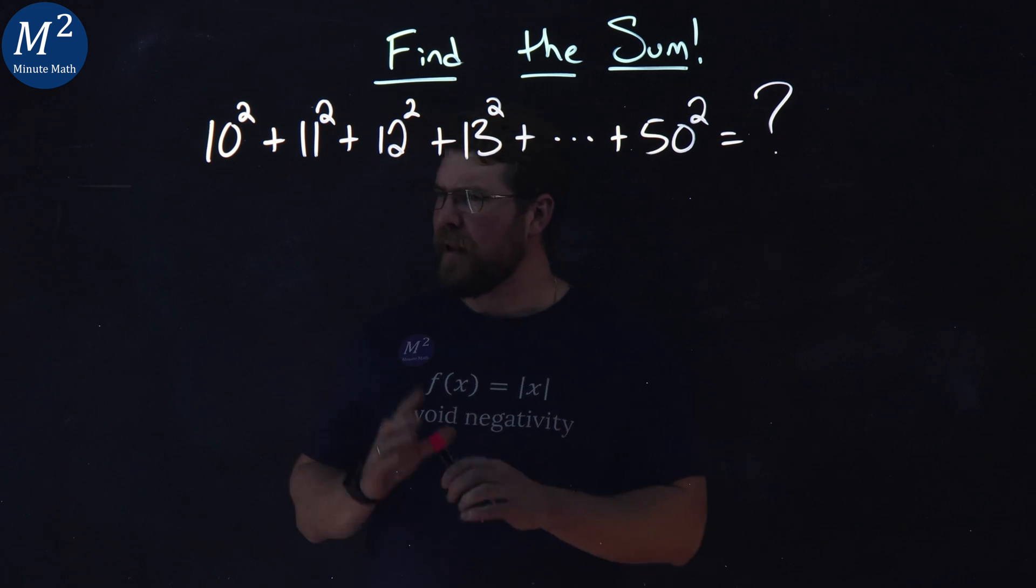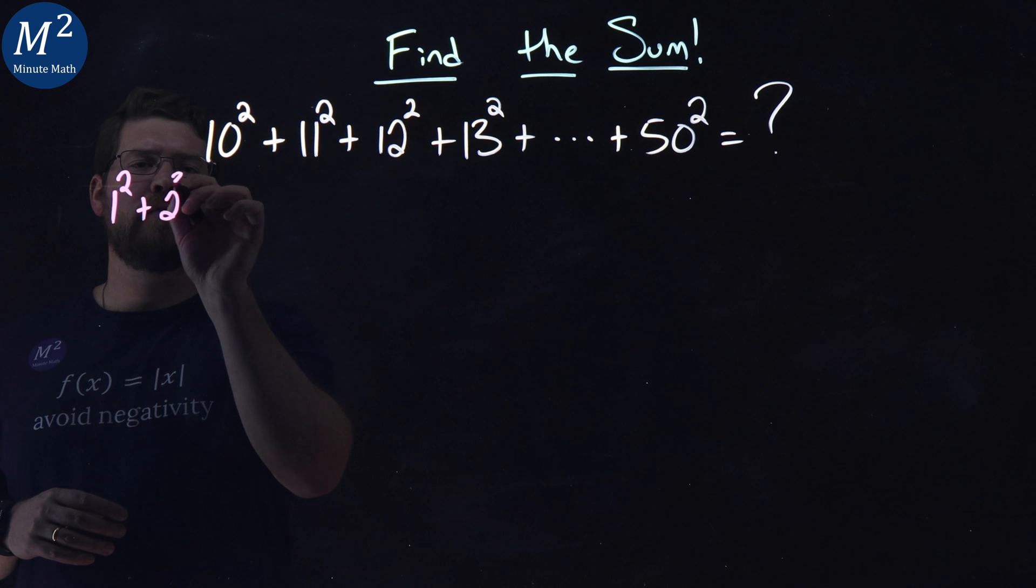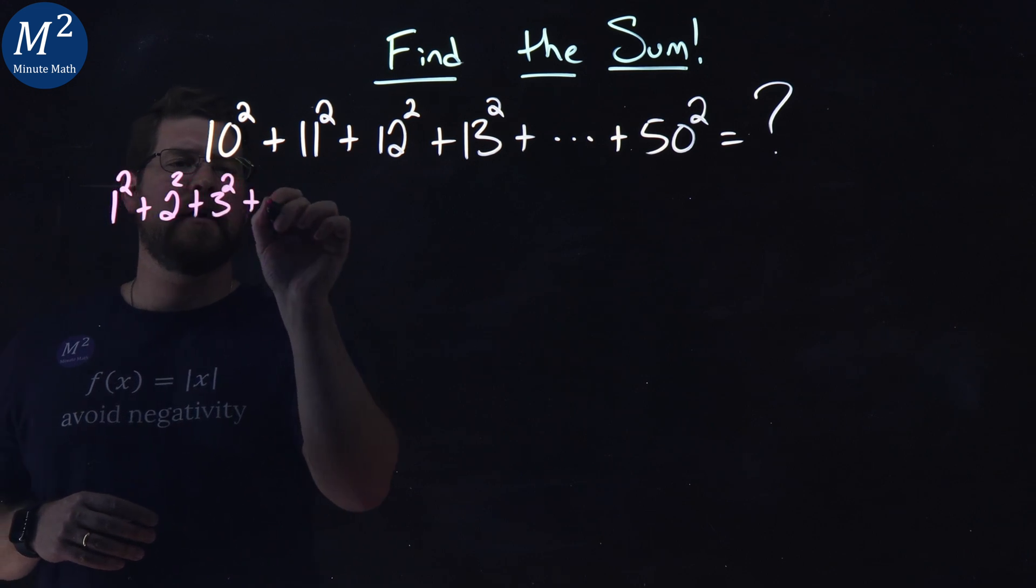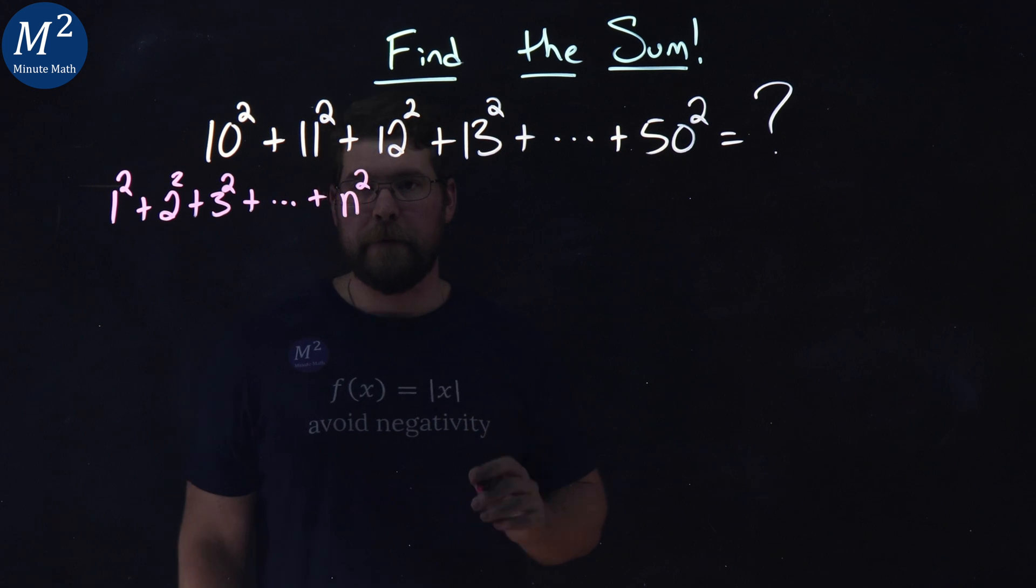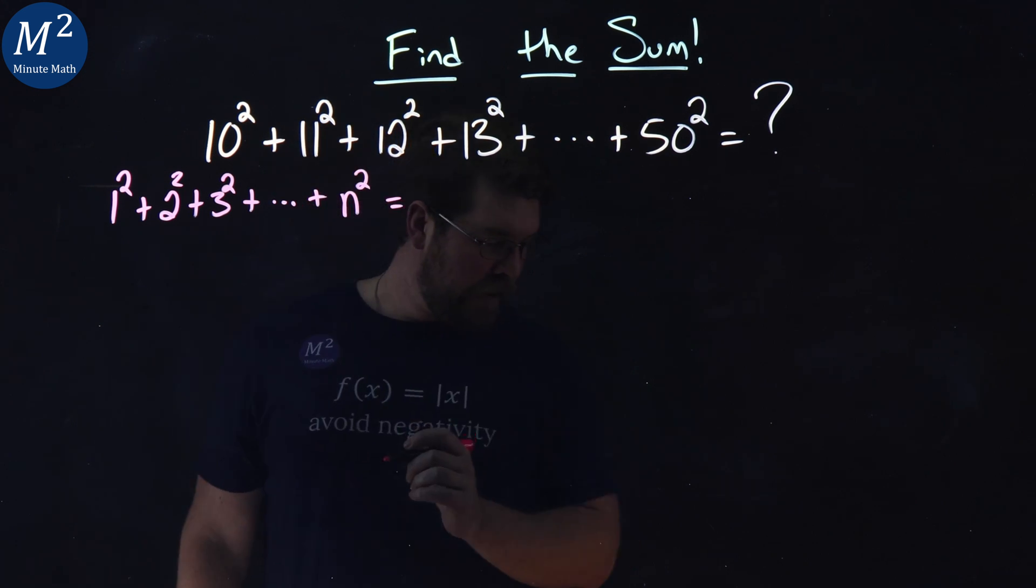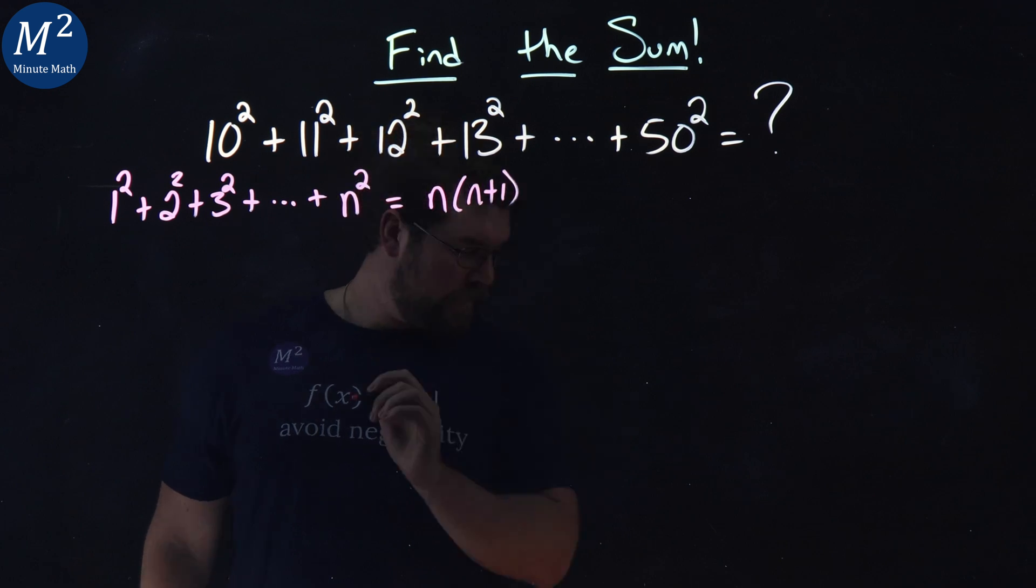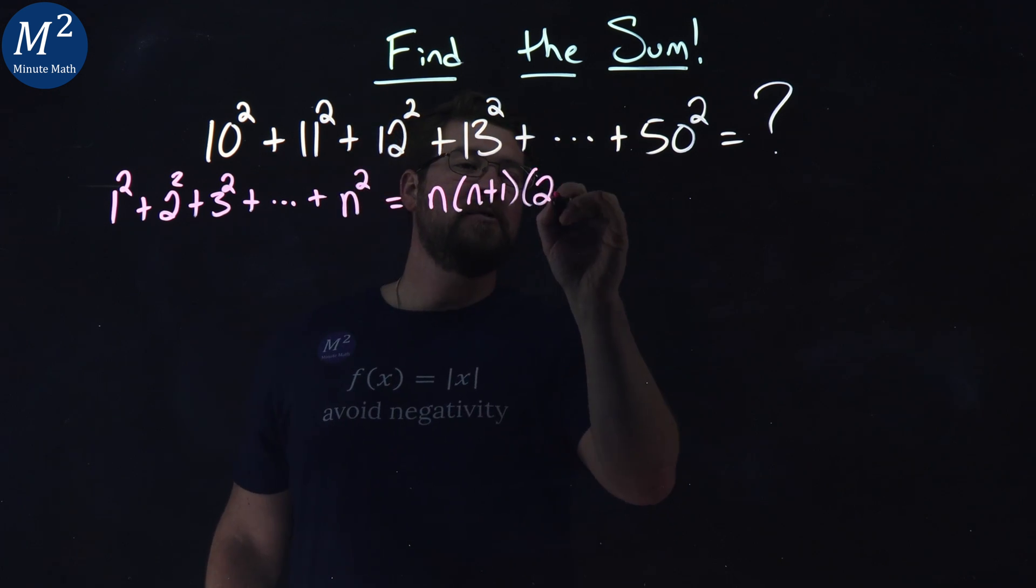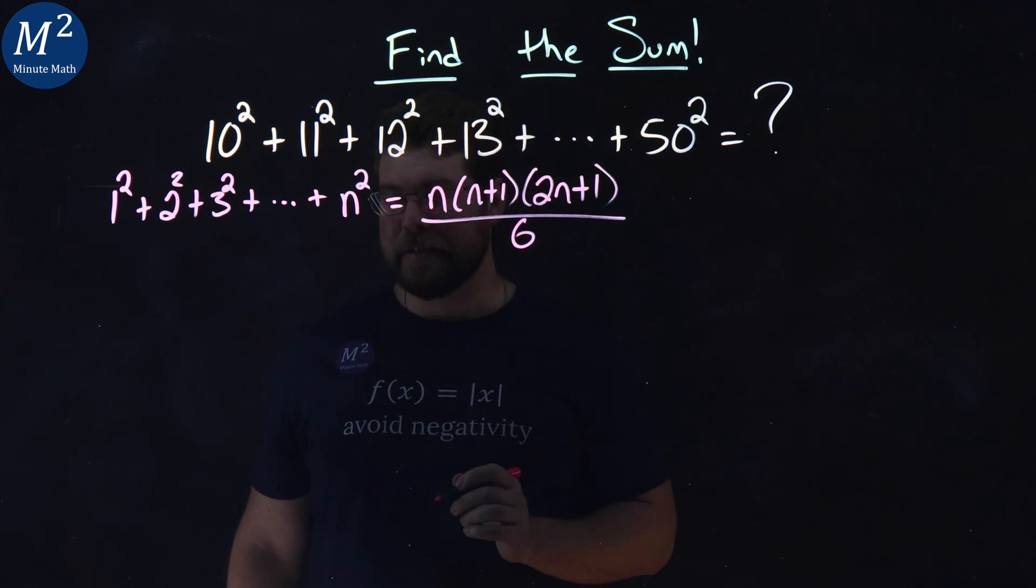The first thing here to solve this problem is the sum of squares formula. Now this formula is a little different. It starts with 1. 1 squared plus 2 squared plus 3 squared plus all the way up to n squared. That gives us a formula of n times (n+1) times (2n+1) all over 6.